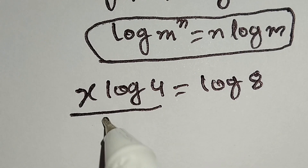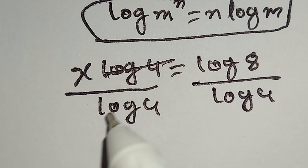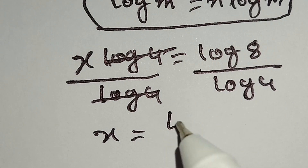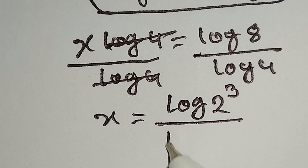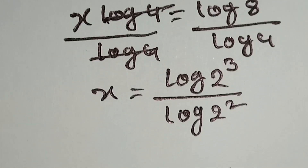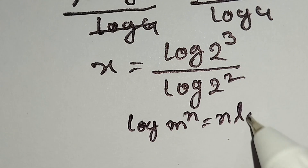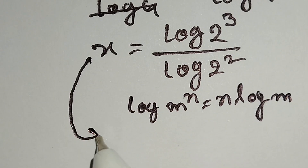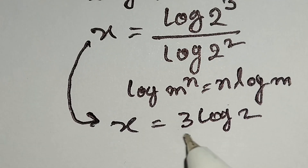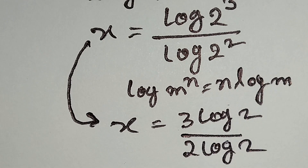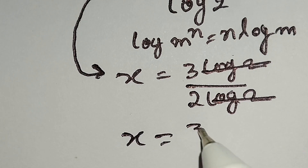Now we divide both sides by log 4. Log 4 and log 4 cancel out, so x is equal to log 8 over log 4. We can write log 8 as log 2 cubed over log 4 as log 2 squared. Applying the formula log m to the power n equals n log m, this becomes x equals 3 log 2 over 2 log 2. Log 2 and log 2 cancel out, giving x is equal to 3 over 2.